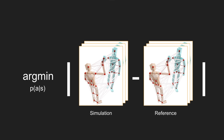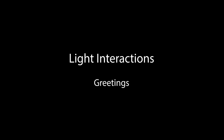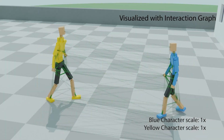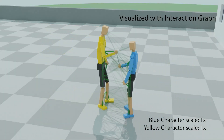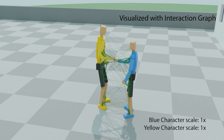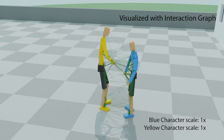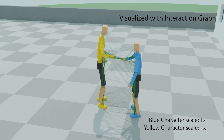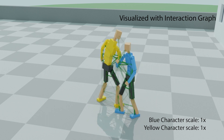By maximizing the similarity, we can get policies for multi-character interactions of various complexity. We first show successful policies on light interactions where interactions are of short duration with little physical forces.